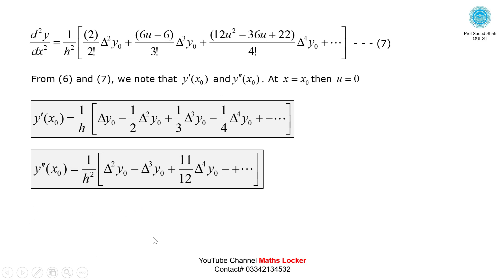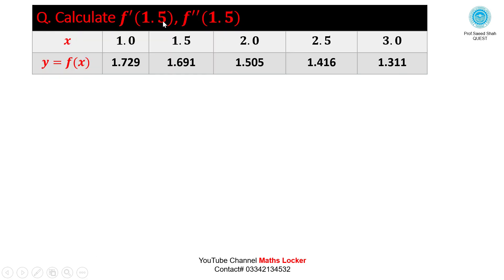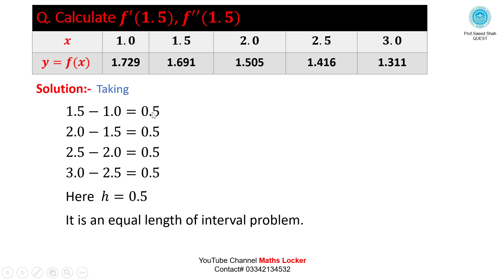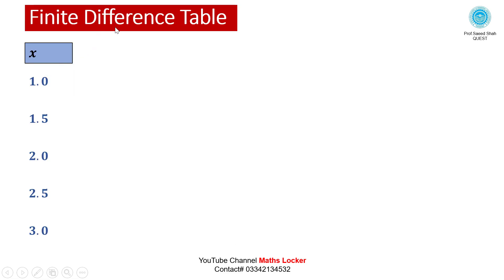These are the two formulas. Now applying them to a numerical example: calculate f'(1.5) and f''(1.5), given data in a table. Since 1.5 is a value in the table, we first check the interval length: 1.5 - 1.0 = 0.5, 2.0 - 1.5 = 0.5, 2.5 - 2.0 = 0.5, 3.0 - 2.5 = 0.5. So h = 0.5. This is an equal interval problem.